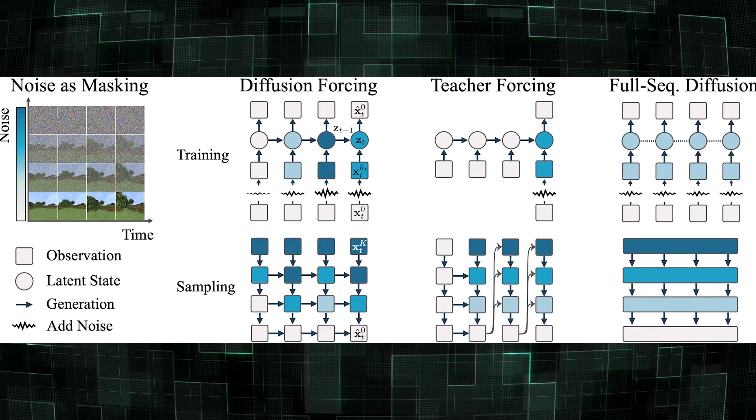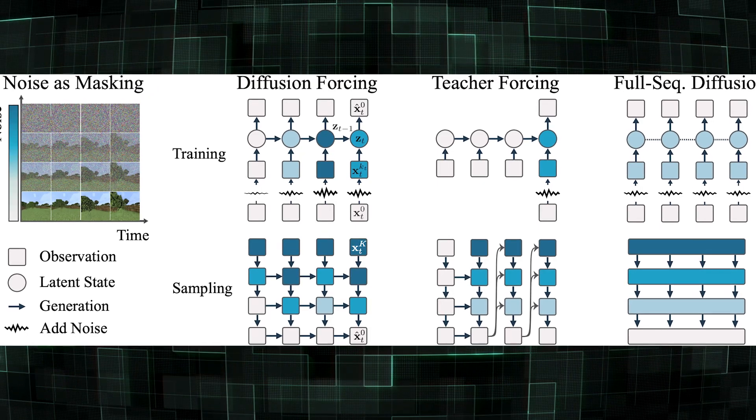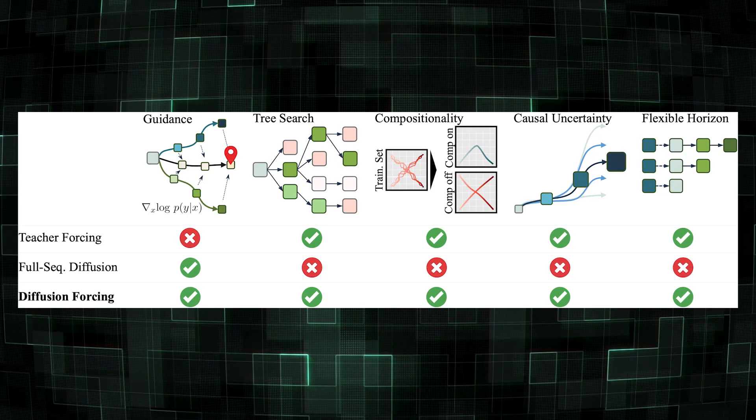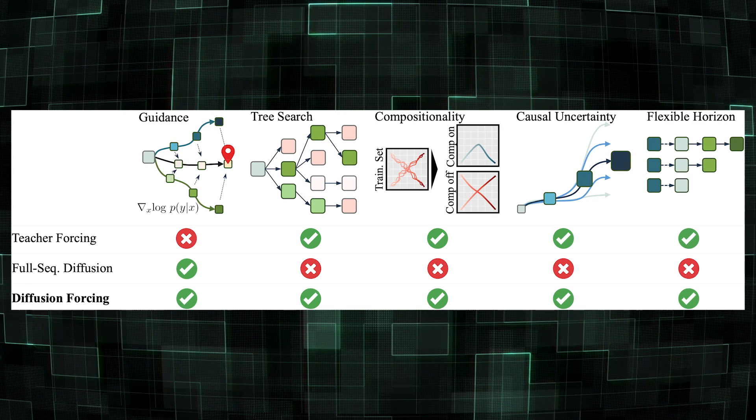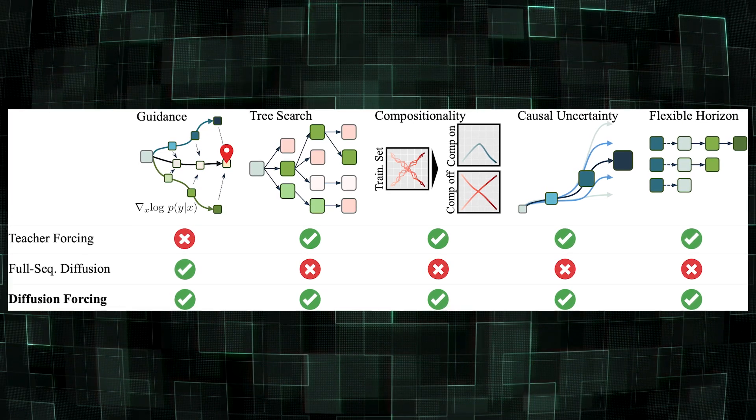What this does is essentially combine the strengths of both models like ChatGPT and those like Sora. Specifically, this model at test time will be able to always predict the next frame in the sequence, and at the same time you can also have it always predict the next frame while still telling it that at some point you should arrive at this particular end state.